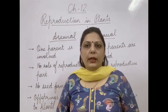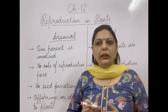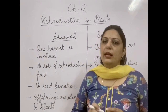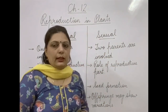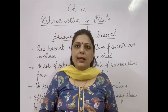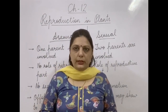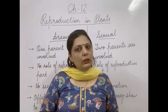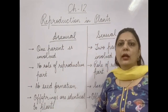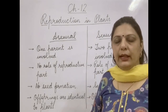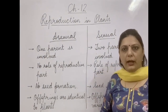One more point: in asexual reproduction, the part involved generally loses its identity — it will not remain as such after the reproduction process. Whereas in sexual reproduction the plant suffers no harm; it remains as such, continues to give flowers, and those flowers ultimately turn into fruits and seeds. So these are the main differences between asexual and sexual reproduction.